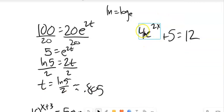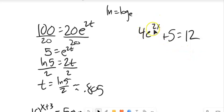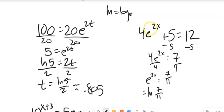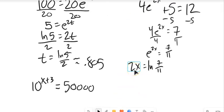Next: 4 times e to some power plus 5 equals 12. I need to isolate the e before using natural log. Subtract 5 from both sides to get 7, then divide by 4 — I'll leave this as 7/4. Now that e is alone, I use natural log: rewrite as a log base e statement, so natural log of 7/4 equals the exponent. Then divide by 2 or multiply by 1/2, and get a decimal approximation.